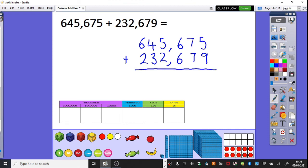five ones add nine ones is 14 ones. Carry over our 10 ones. Seven 10s add seven 10s is 14 10s and another 10 is 15 10s. Carry over our 10 10s.